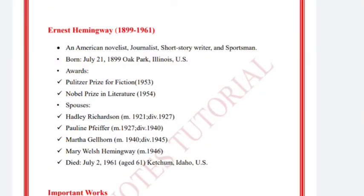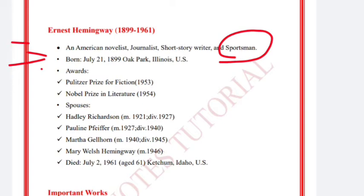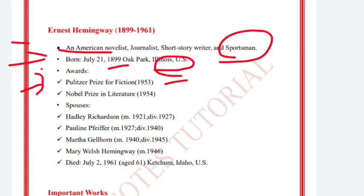Hello everyone, welcome to Best Knows Tutorial. In this video we are going to talk about Ernest Hemingway. Ernest Hemingway was an American novelist, journalist, short story writer, and sportsman. He was born on July 21, 1899, in Oak Park, Illinois, USA. The first fact is he was an American novelist, and second, he was born in 1899. He got the Pulitzer Prize for fiction in 1953.